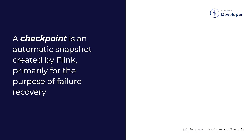In order to recover from failures, Flink relies on snapshots of its state. All snapshots are written to a durable distributed file system such as S3. These snapshots come in two different formats. One kind of snapshot is a checkpoint. Checkpoints are managed automatically by Flink itself, and they are taken for the purpose of recovering from failures, written in a format that is optimized for quick recovery.